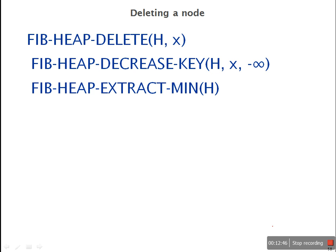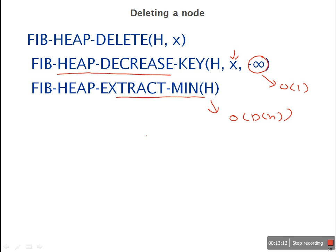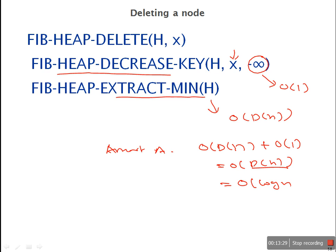Next is deleting a node from the heap. The simple procedure first decreases the key to minus infinity, then applies the extract-min operation. The decrease-key takes O(1) time and extract-min takes O(d(n)) time, giving a total amortized cost of O(d(n)). Since the maximum degree of a heap is O(log n), the delete operation takes O(log n) time. This procedure simply calls the two already-defined procedures: Fibonacci-Heap-Decrease-Key and Fibonacci-Heap-Extract-Min.